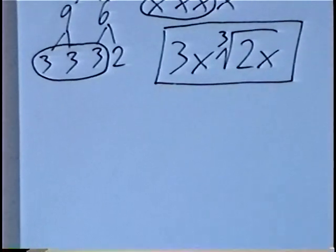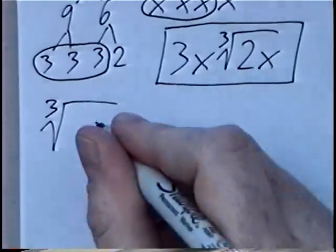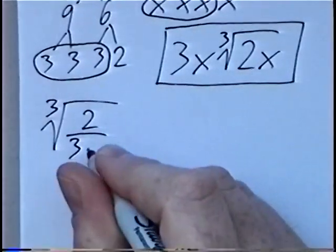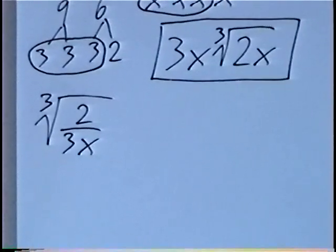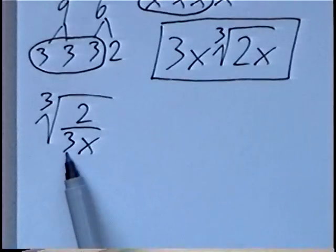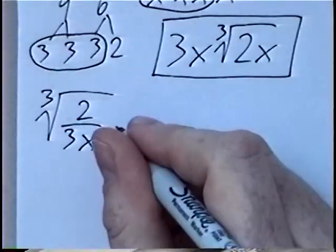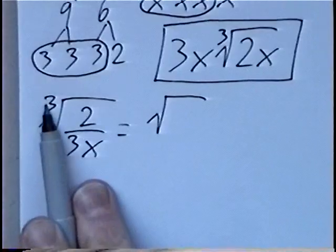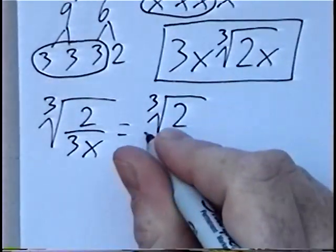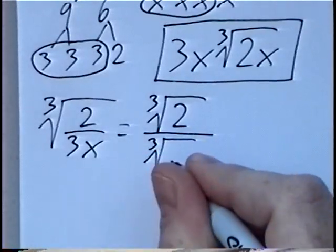The last question for this section is the cube root of 2 over 3x. We have a fraction inside of a cube root. If we do factor trees on 2 or 3, we cannot factor those or there won't be any sets of 3. Similar to square roots, we can split the radical into the numerator — the cube root of 2 — and the denominator — the cube root of 3x.